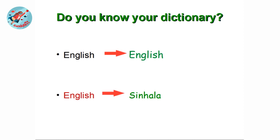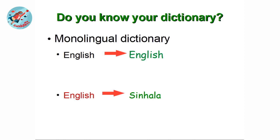English-to-English dictionaries are called monolingual dictionaries. In monolingual dictionaries, all the words are described using the same language. In bilingual dictionaries, the words are described using a second language — for example, an English-to-Sinhala dictionary is a bilingual dictionary.